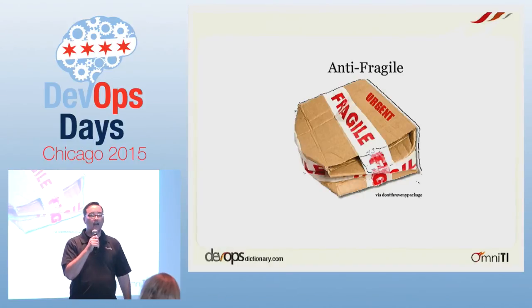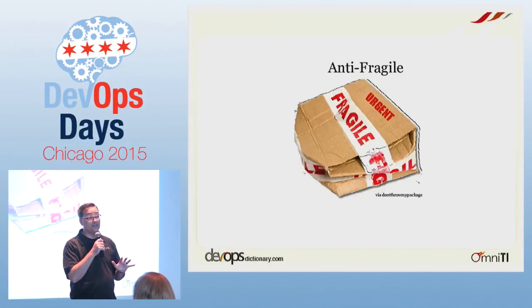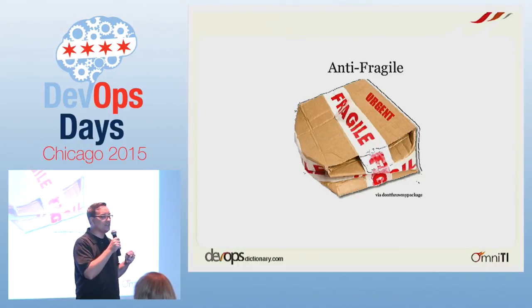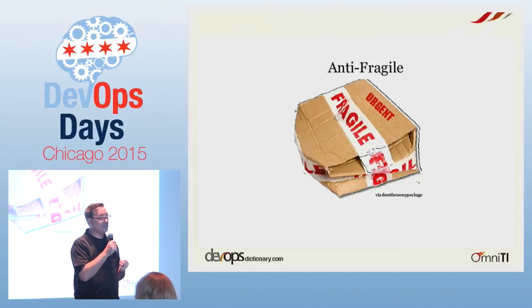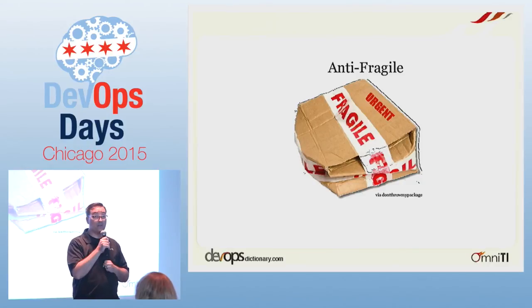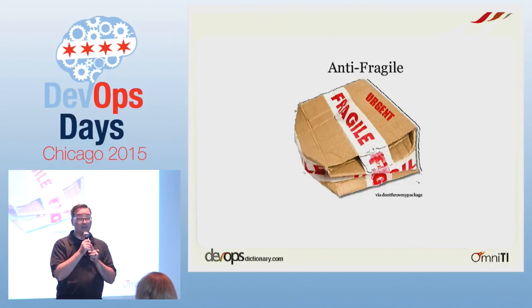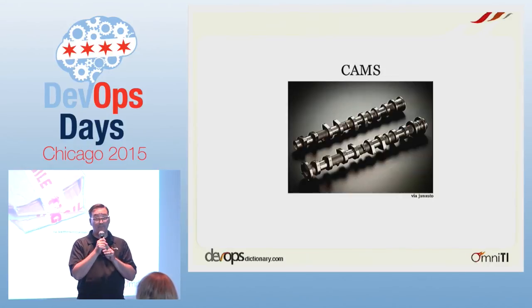Antifragile — very quickly — antifragile is the property of a system that somehow gets more resilient the more you damage it. I think it's a fascinating concept and I'm not smart enough to come up with an example, so this is only a 15-second slide and we're going to move on.